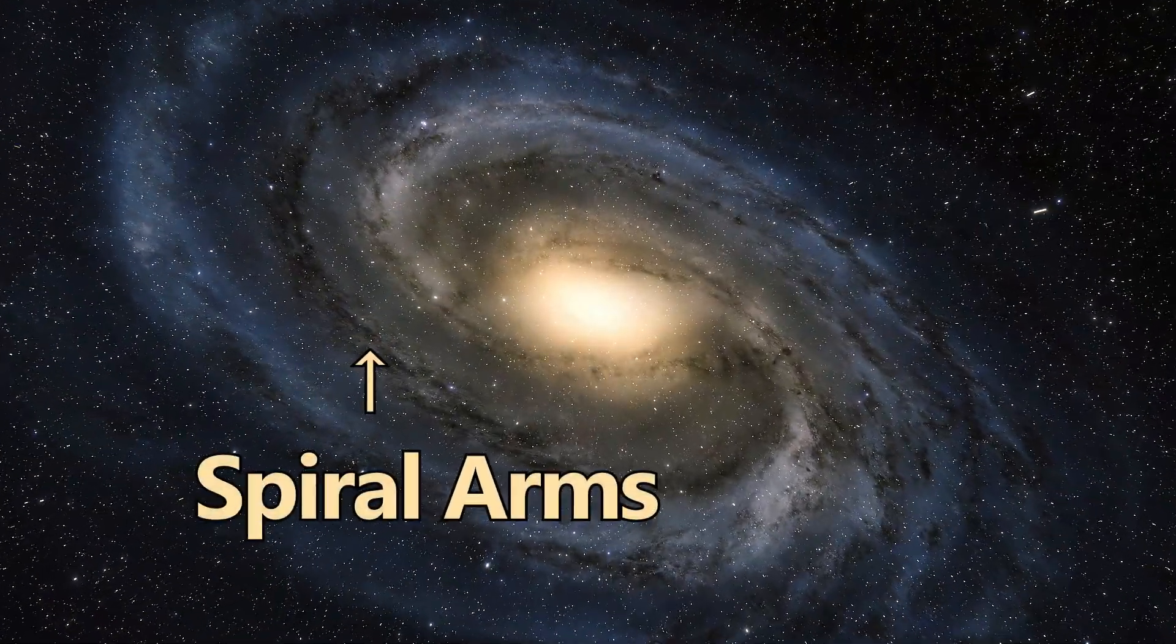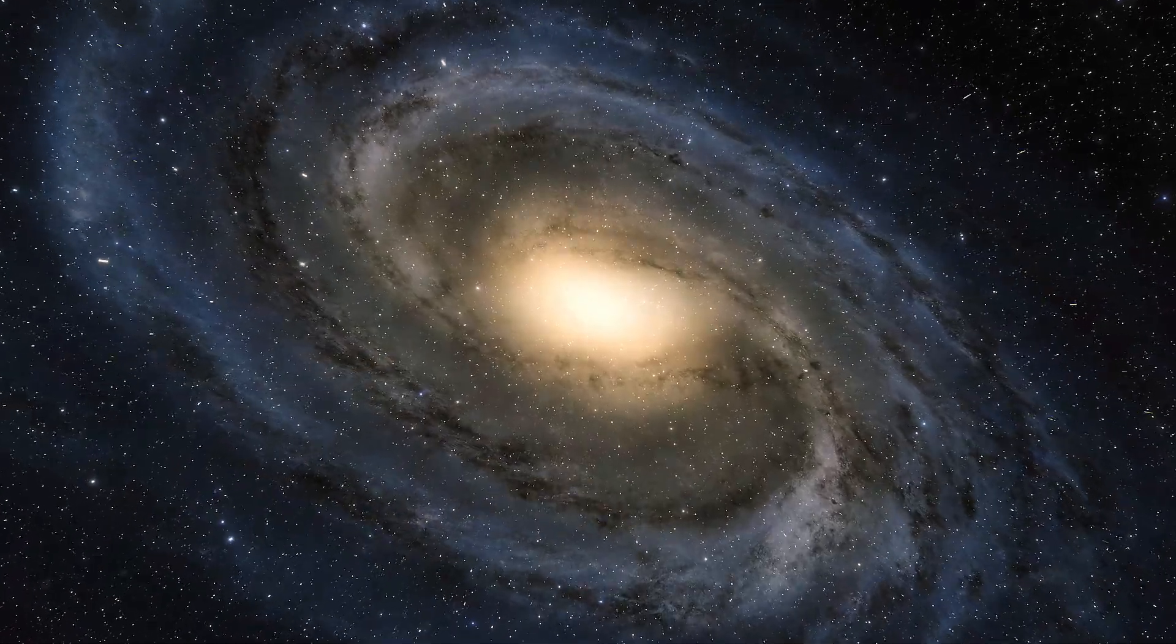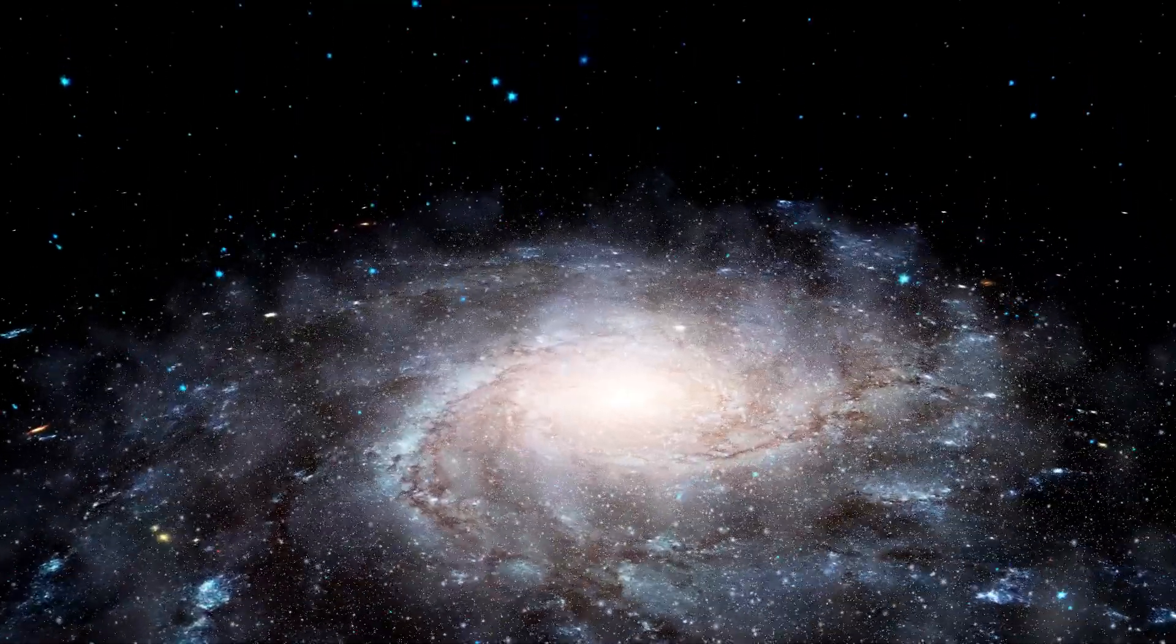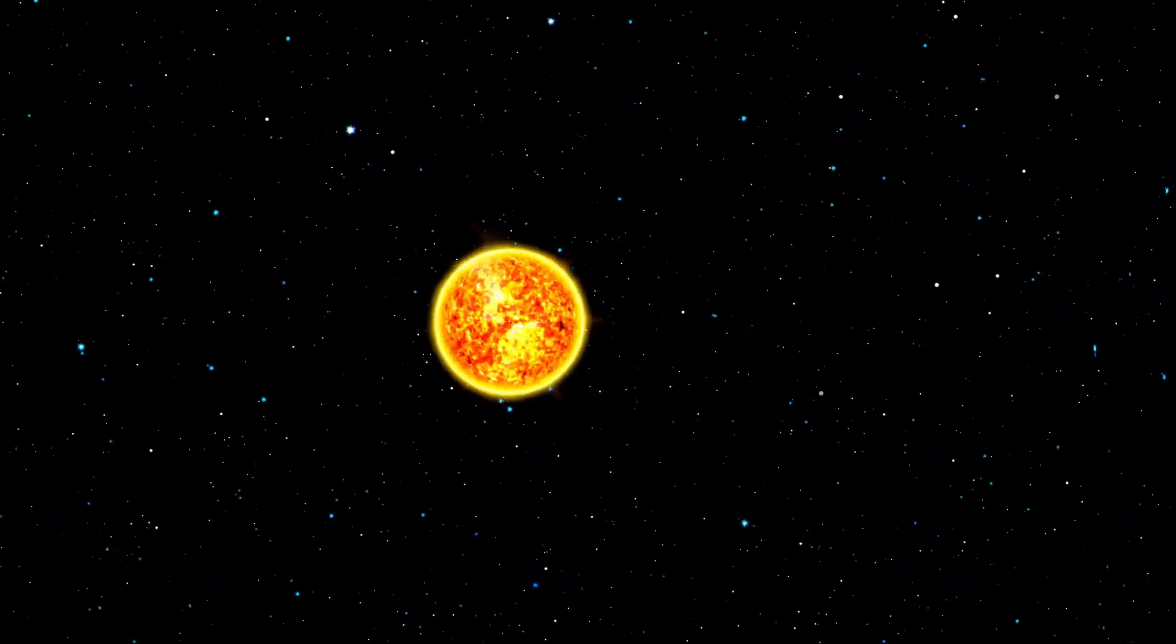The spiral arms are regions of higher density where new stars are often formed. Our star, the Sun, and the rest of the solar system reside near a small partial arm called the Orion Arm, or Orion Spur.